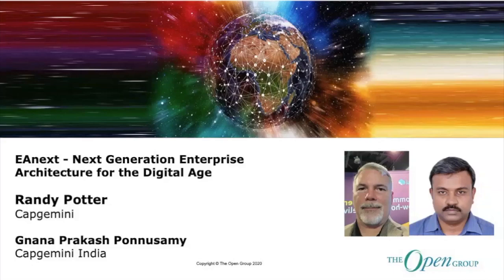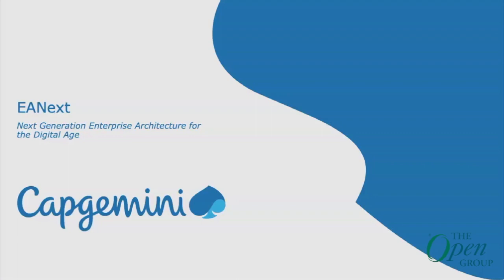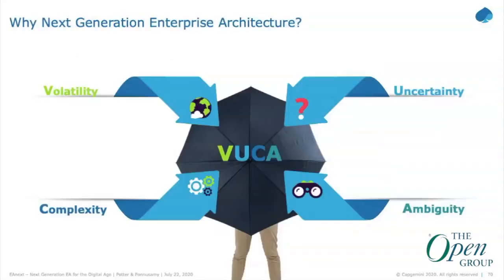It's fairly fortuitous that we come last because the last four or five presentations really consolidate into what we're going to talk about here. This idea of next generation architecture came about a little over two years ago. Several years ago there was this topic of VUCA — volatility, uncertainty, complexity, and ambiguity — but there weren't good answers to how to address that, particularly from an architectural perspective.